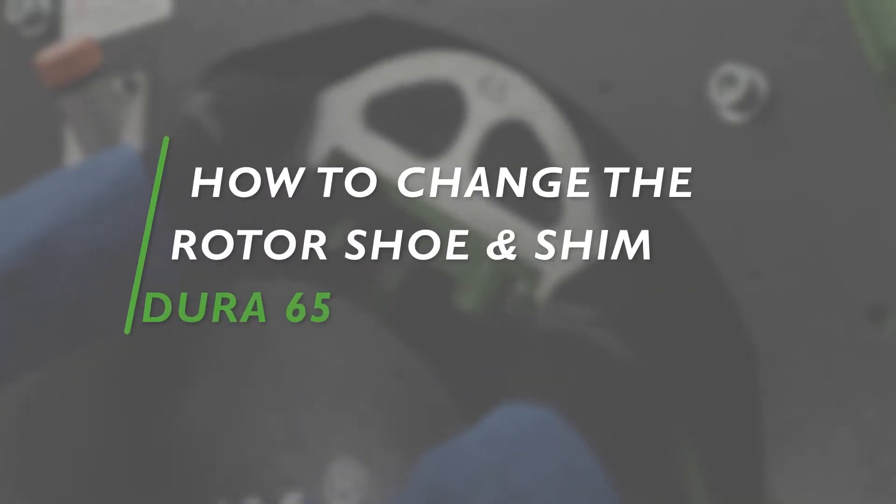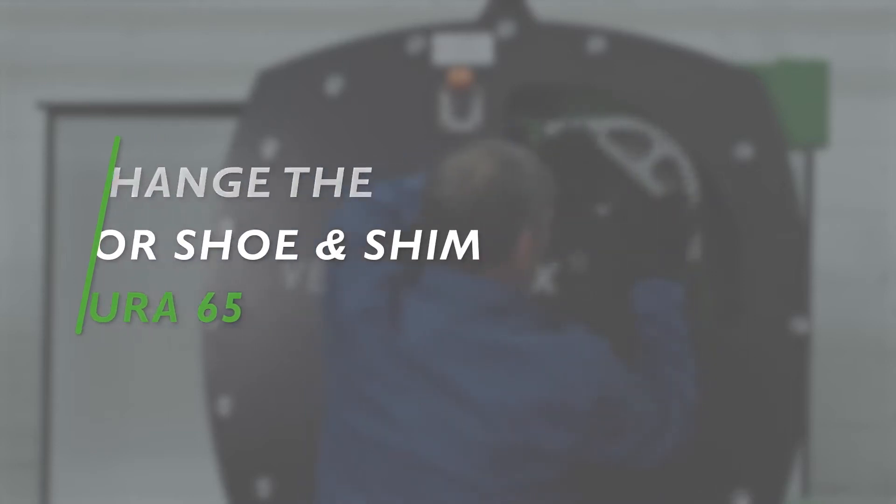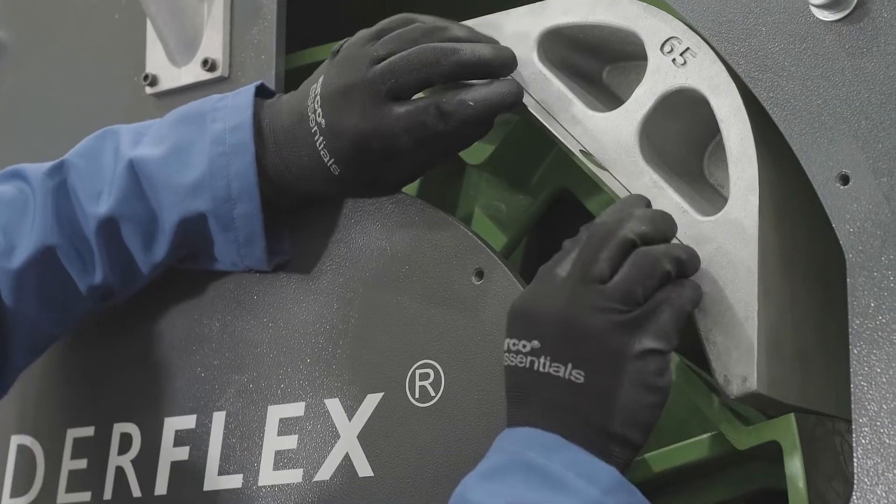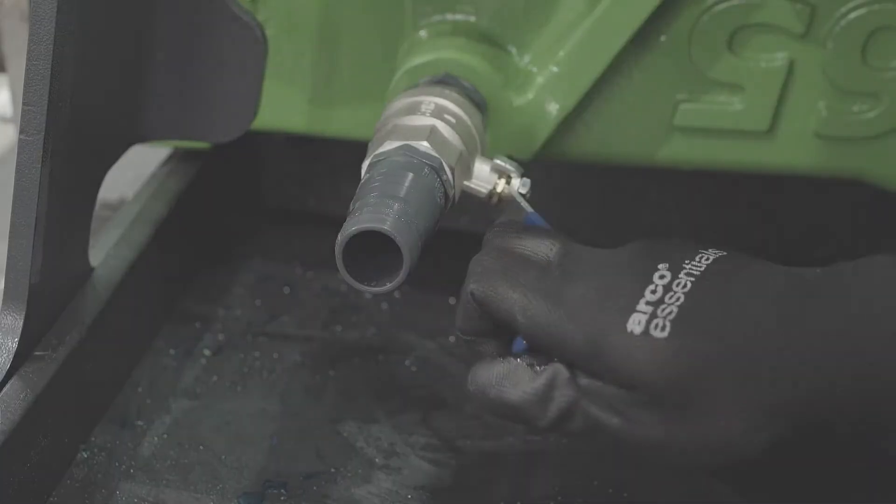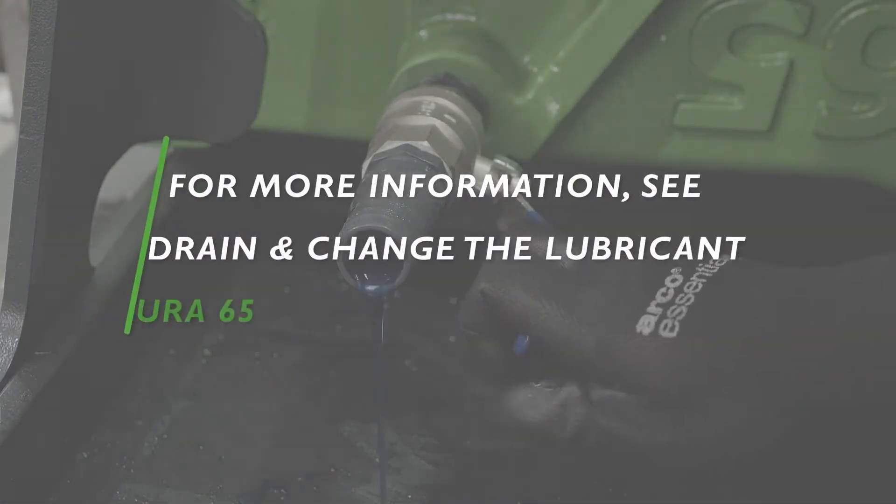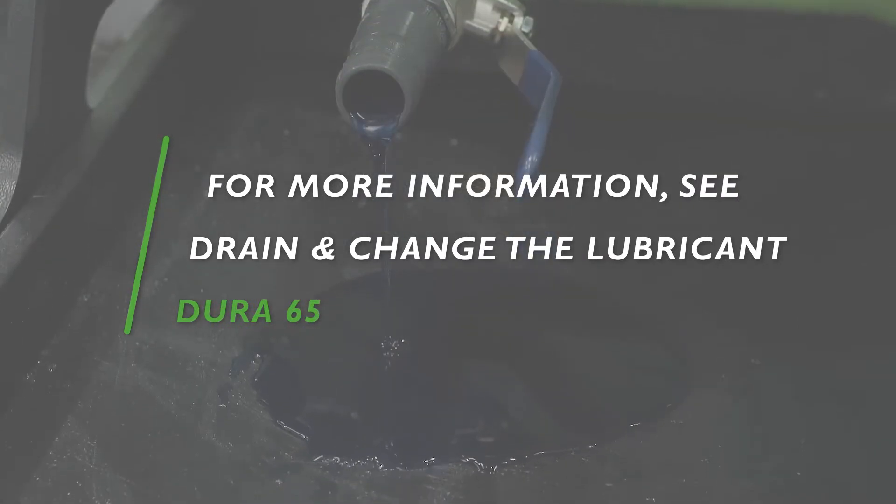In this tutorial, we will present how to change the rotor shoe and shim the Dura 65 pump. Please note that the Dura 65 can be shimmed without draining the lubricant. Nevertheless, for changing the lubricant from the pump housing, please refer to our tutorial on how to drain or change the lubricant.